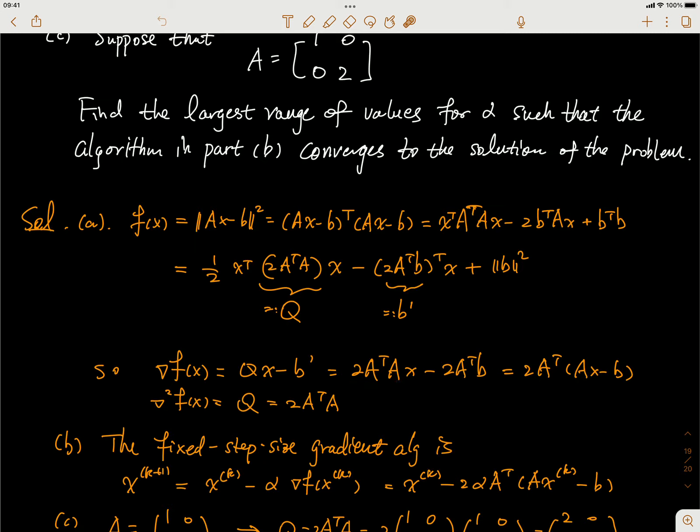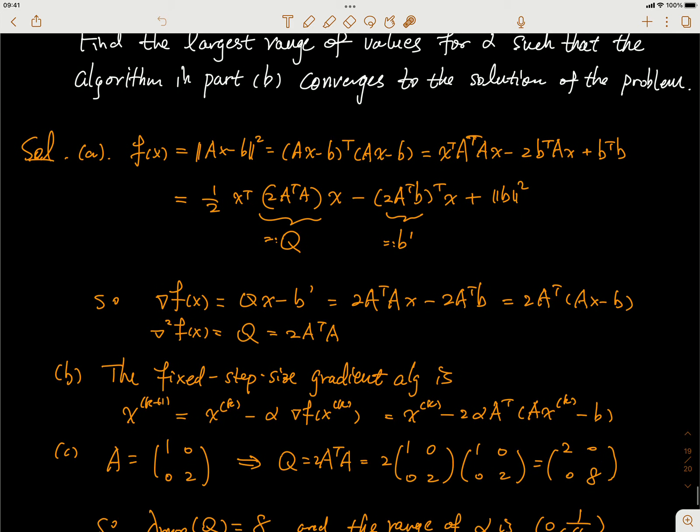So it's Qx minus b', where Q is that and b' is this. You can see that 2A^T is common for both terms, so I can extract them out. This is usually easier to memorize.